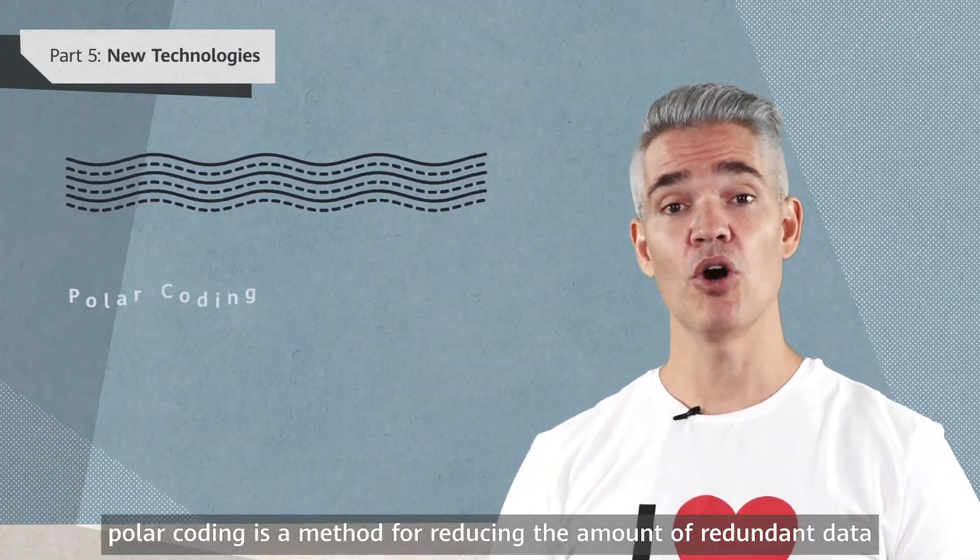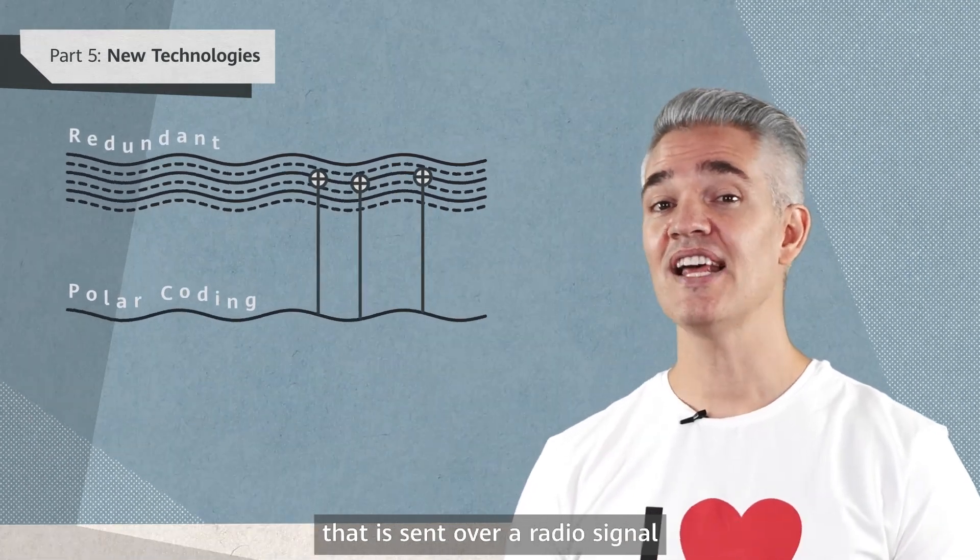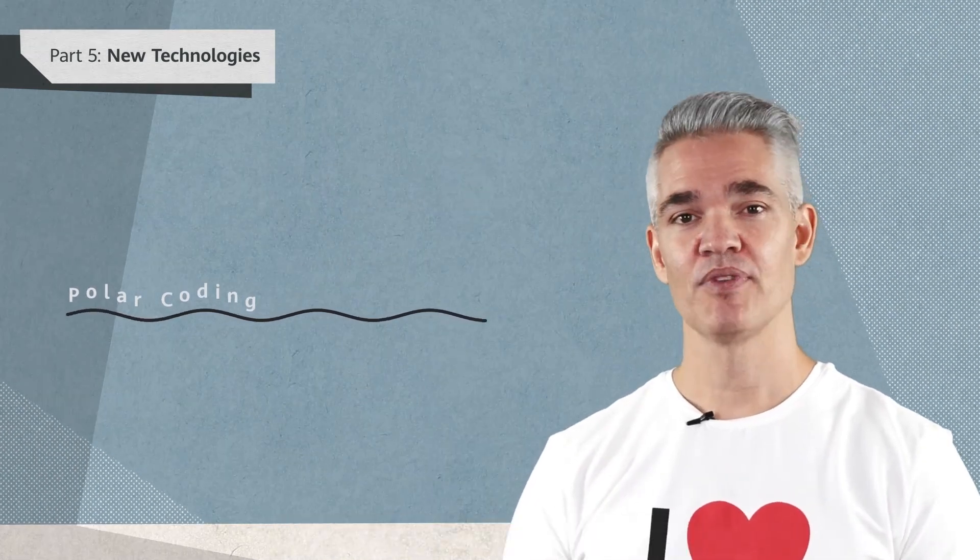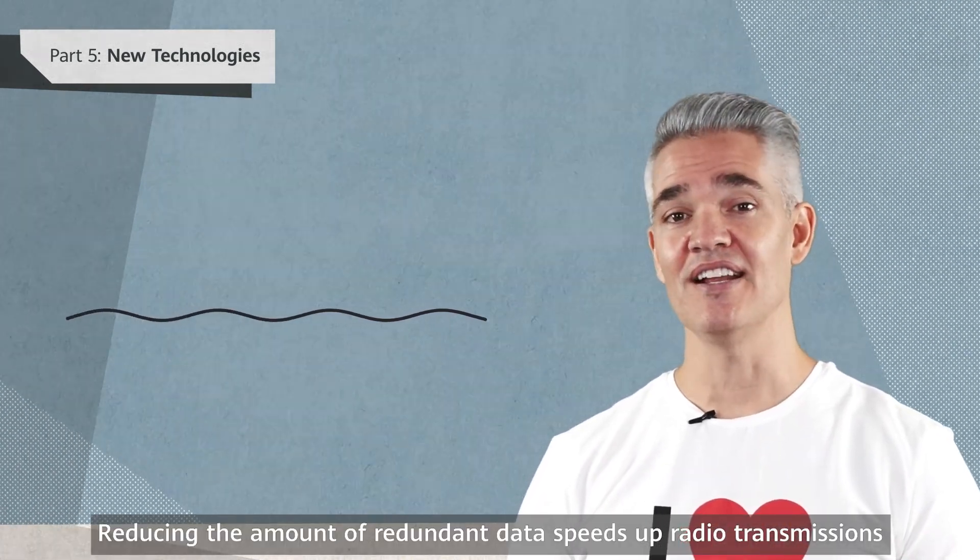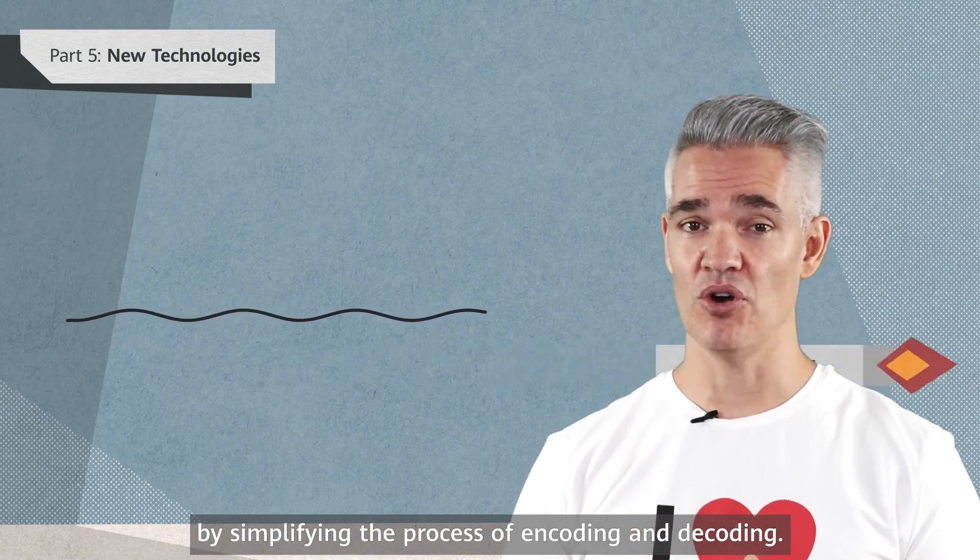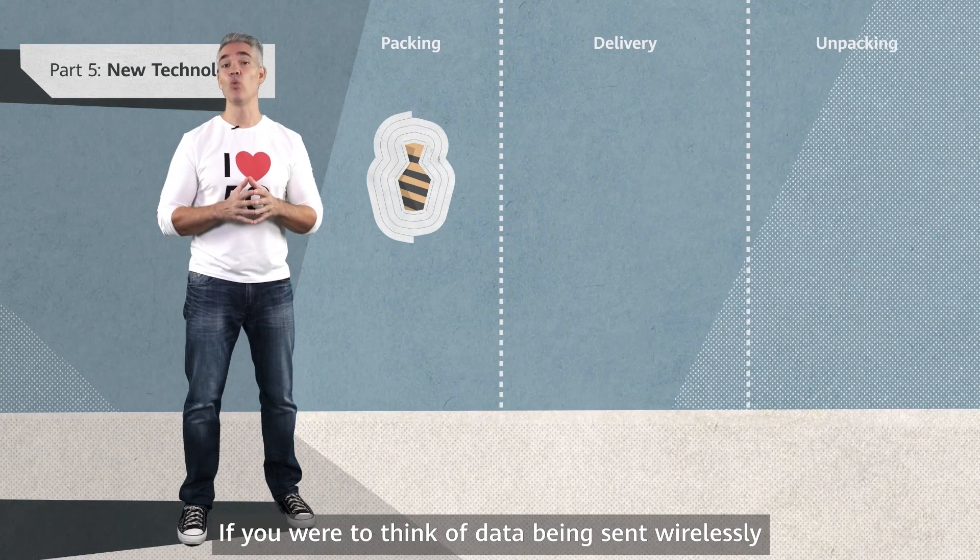In a nutshell, polar coding is a method for reducing the amount of redundant data that is sent over a radio signal to protect the integrity of a message. Reducing the amount of redundant data speeds up radio transmissions by simplifying the process of encoding and decoding.